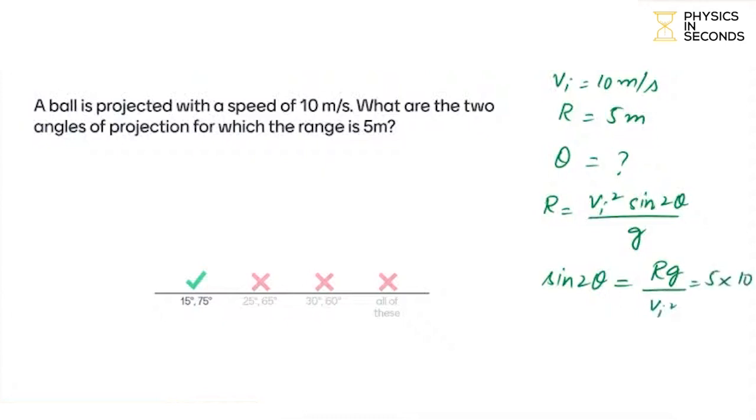R is 5, g is 10, and velocity is 10 squared. This will cancel. 5 over 10 means 1 over 2. So sin 2θ is 1 over 2.